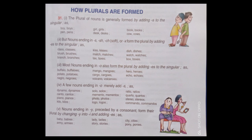Nouns ending in Y preceded by a consonant form their plural by changing Y into I and adding ES, as: baby, babies; lady, ladies; city, cities; army, armies; story, stories; pony, ponies.